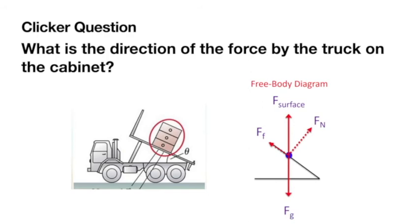The key takeaway is that F_g goes down, and so if we want F_net to be zero, the resulting compensation from the truck is straight up. Those two forces — normal force and friction — add up tip to tail to give the total force from the surface of the truck.